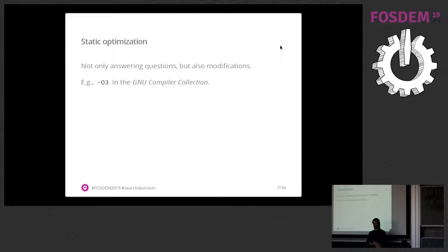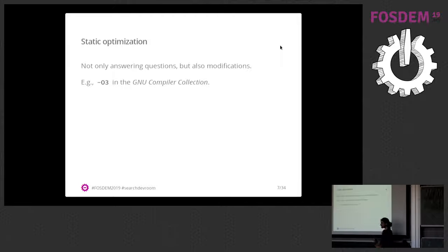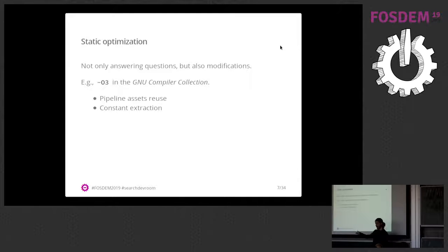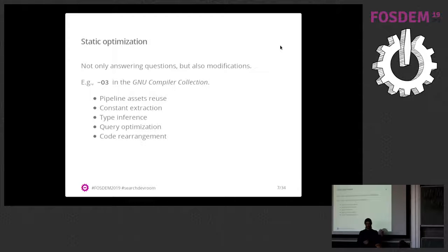We can do more than just analyze — we can also modify things based on static analysis. For example, if you're familiar with GCC, there are the optimization flags O1, O2, O3 that change how the compiler optimizes code — like reusing processor registers, extracting constants from mathematical expressions, type inference, query optimization in SQL, loop fusion, or changing loop order. You can also do cost analysis and cost optimization, which is done in GCC.